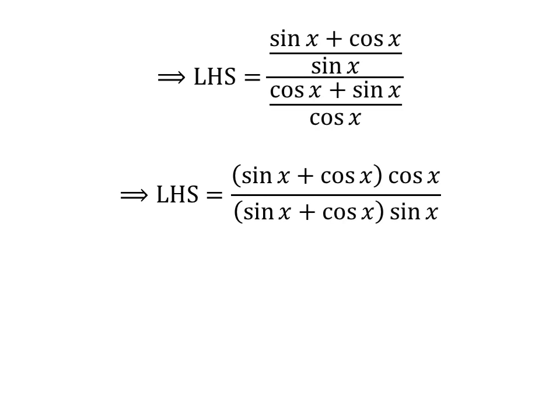Further simplification gives us left-hand side of the identity is equal to sine of x plus cosine of x times cosine of x, upon sine of x plus cosine of x times sine of x.